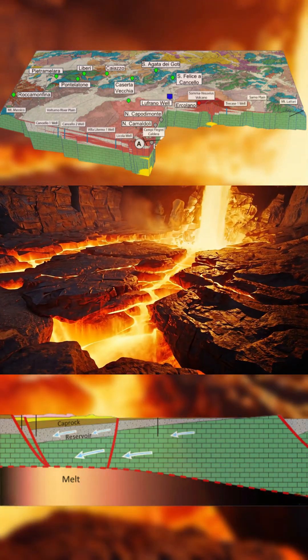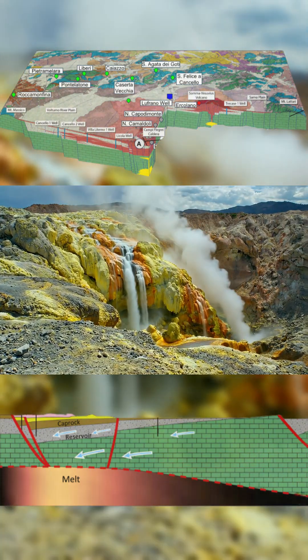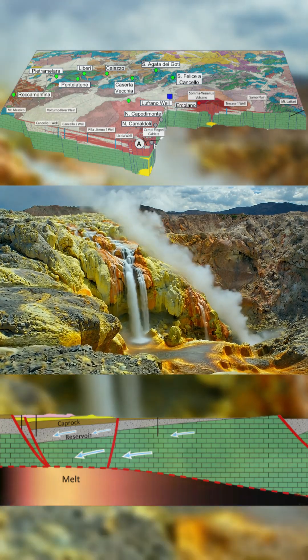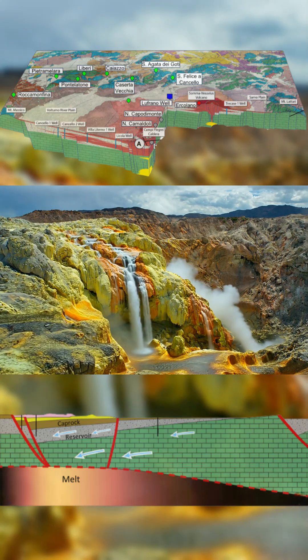This exact pattern was seen in the years leading up to the 1984 evacuation. It's happening again. The same uplift curve, the same quake depths, the same signs of stress deep beneath the city.